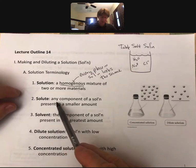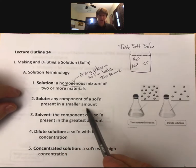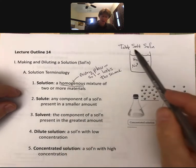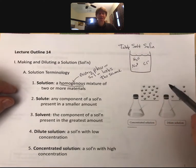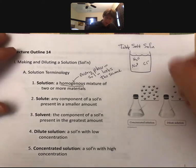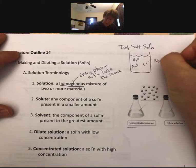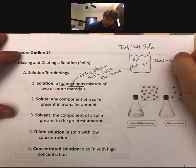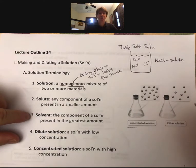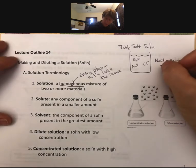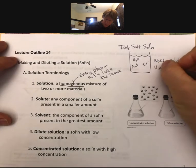The solute is any component of a solution present in a smaller amount. In our table salt solution, those would be the sodium and the chloride ions, or we could also say that sodium chloride was our solute. The solvent would be the component of a solution present in the greatest amount, and that would be our water.